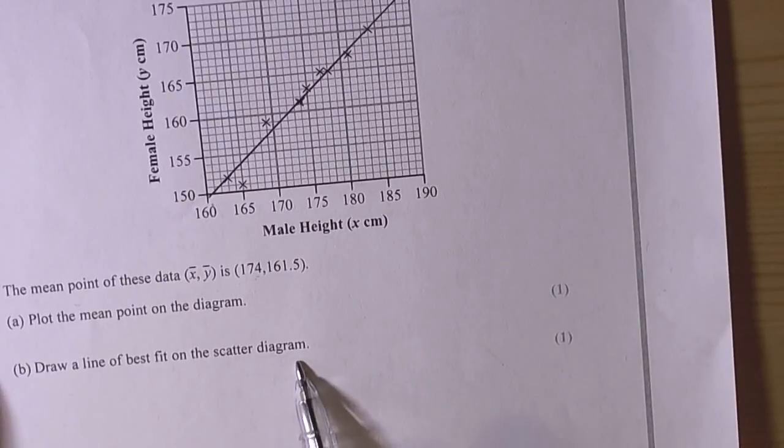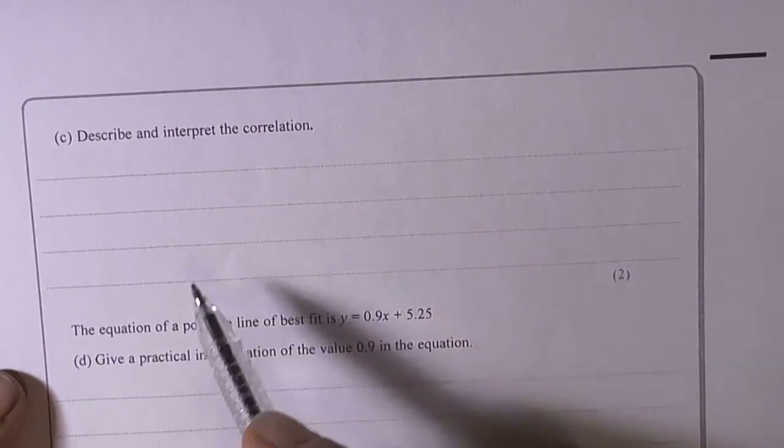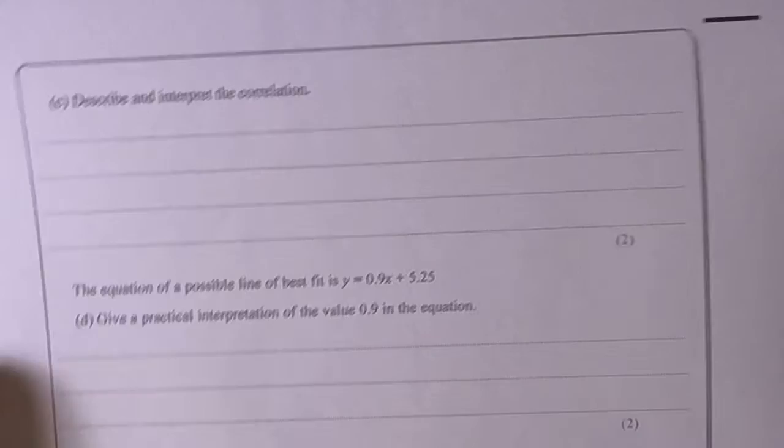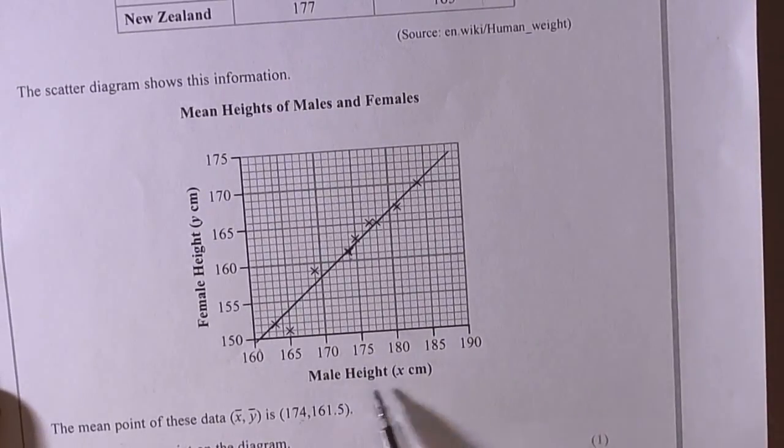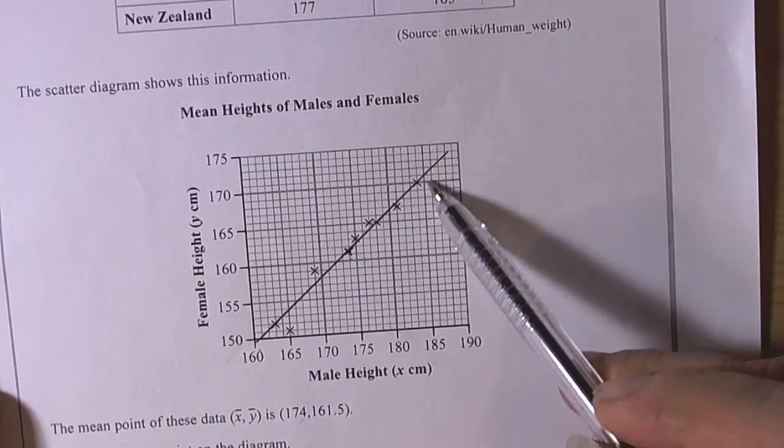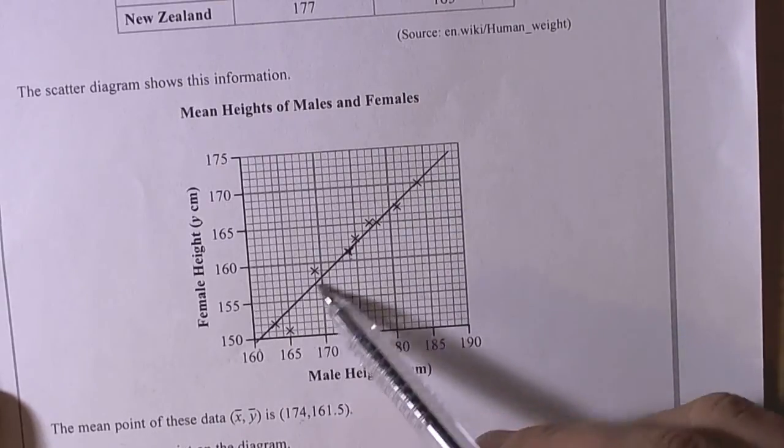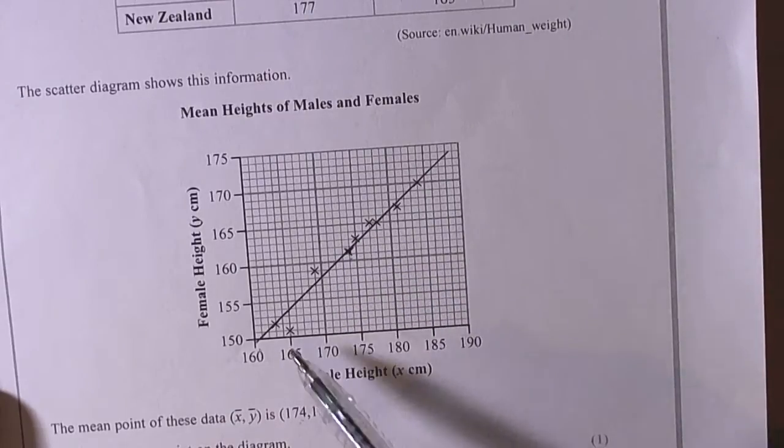We draw the line of best fit always through the mean point, and we must always plot the mean point. The question goes on and says describe and interpret the correlation. We can see here that as the male height increases, the female height also increases. It's a positive correlation and quite a strong positive correlation if we look at how close the crosses are to the line of best fit - they're fairly close.